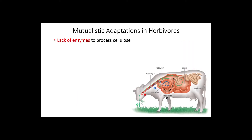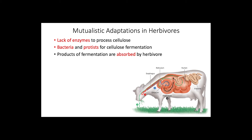Finally, we have mutualistic adaptations strictly for herbivores. A large number of these animals lack enzymes that process cellulose, a major component of plants. However, there are microorganisms with enzymes that digest cellulose living in the alimentary canals of these herbivores, specifically in fermentation chambers. The products of fermentation are then absorbed by the herbivore, with some products like sugars also serving as nutrients for the microorganisms.